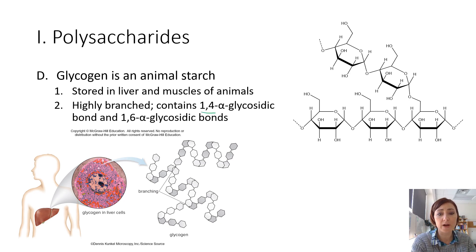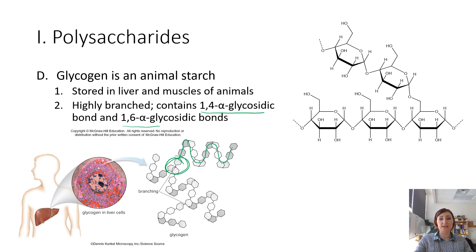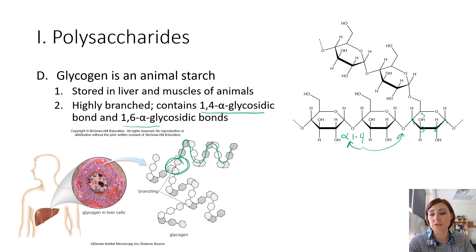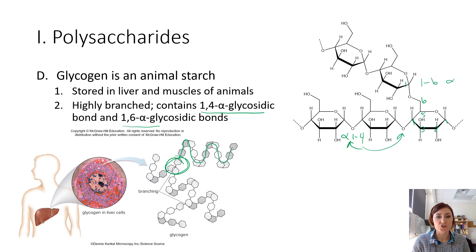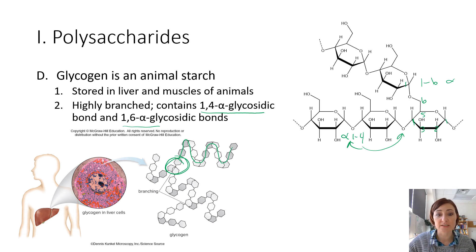Glycogen has alpha-1,4 glycosidic linkages, which form the straight chain, and it also has alpha-1,6 linkages. Here's an alpha-1,6 linkage — you have this straight chain with alpha-1,4 linkages both here and here, and then counting around the structure, we have a 1,6 alpha linkage. That alpha-1,6 linkage is what provides the branching, and that is what it would look like in amylopectin as well.